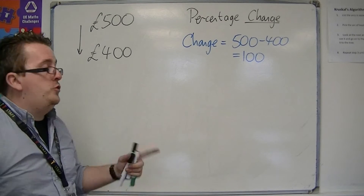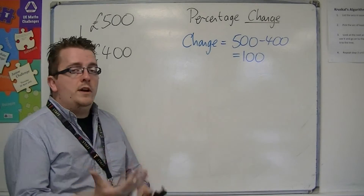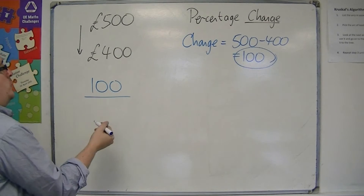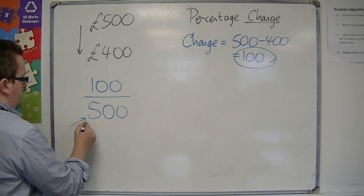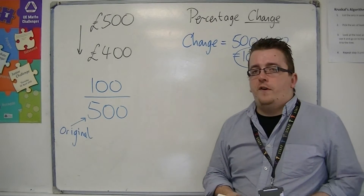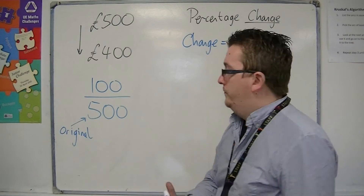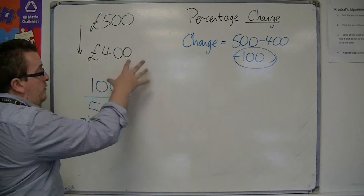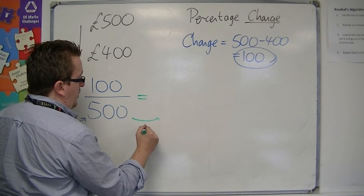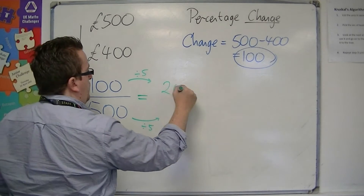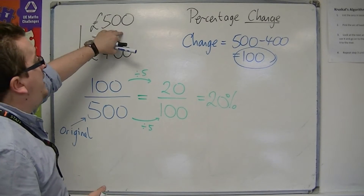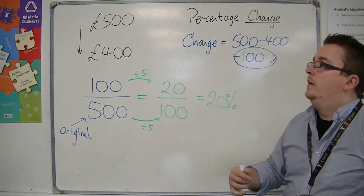So it's gone down by £100. To work out the percentage change, you take the change and write that number as a fraction of the original value — and it's always the original value. So we've got £100 over £500, which we now want to convert into a percentage. We could do top divided by bottom then times by 100, or you might notice you could divide top and bottom by 5 to get 20 over 100 — so 20%. The antique has lost 20% of its value due to the damage.